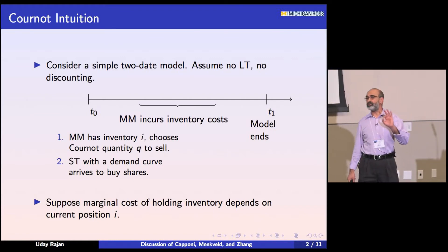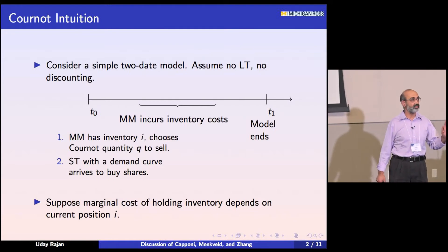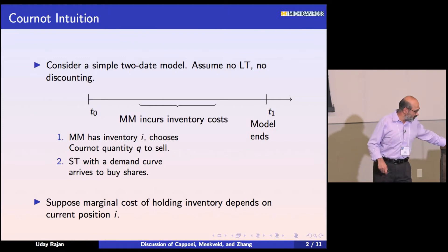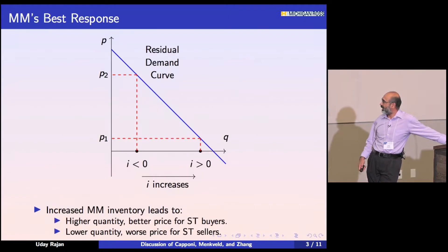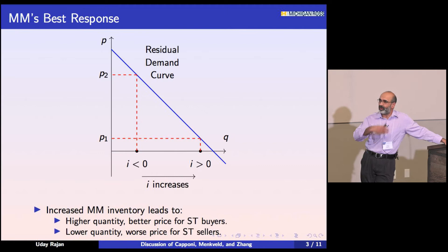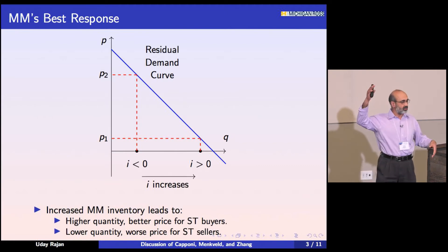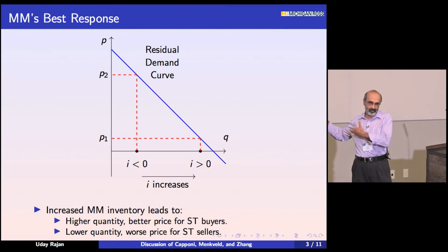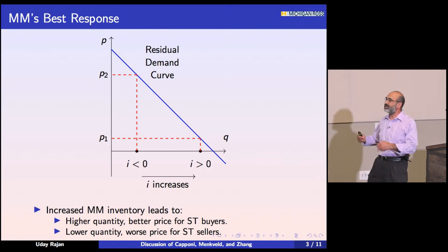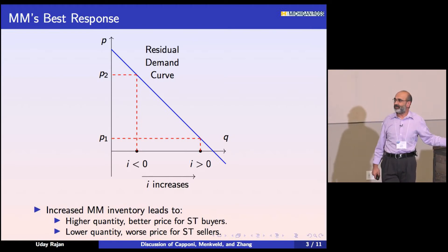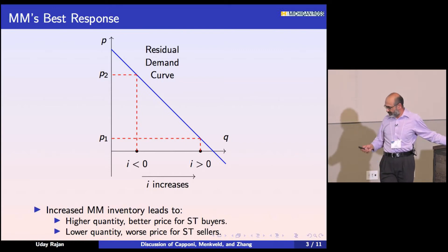Let's assume the marginal cost of holding the inventory depends on the pre-existing position that the market maker has. We know how to solve a model like this — it's a Cournot model. We fix the quantities offered by all of the other market makers. The small trader has some linear demand curve. We can think of market maker J as having a residual demand curve, and then they're trying to pick which point in this demand curve they want to be at, which will determine what the price in the market is.